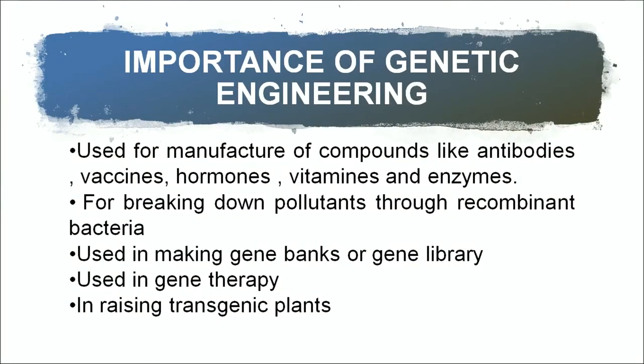Genetic engineering is used for manufacture of compounds like antibodies, vaccines, hormones, vitamins and enzymes. Many a times a patient is suffering from a disease and is not able to produce enough antibodies, so antibodies can be produced artificially in bioreactors and administered to the patient. Vaccines are basically the attenuated organisms which cause the disease; once given to a person they create immunity in the body. Hormones, vitamins and enzymes are also produced using genetic engineering.